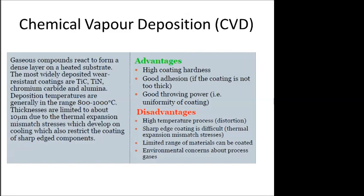The disadvantages of CVD are that it is a high-temperature process which can cause distortions, coating of sharp edges is difficult, and thermal expansion mismatch stresses occur. Only a limited range of materials can be coated based on the furnace or chamber size, and there are environmental concerns about process gases since a vacuum must be maintained in which the gaseous compounds react to form dense layers.